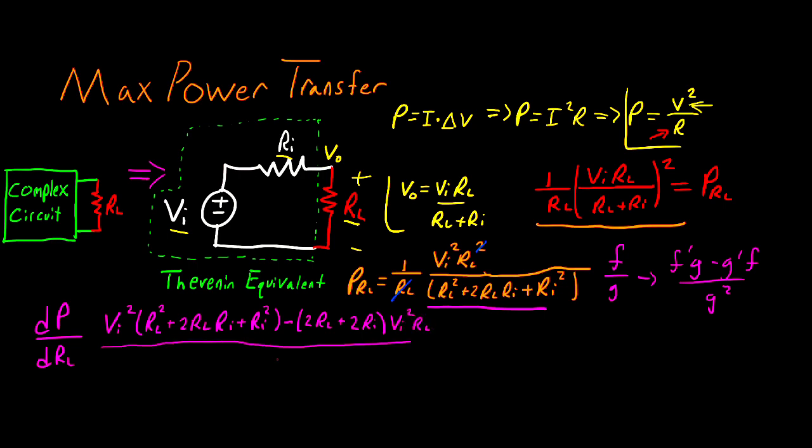And this whole thing is going to be divided by g squared. But the good news is because we're doing optimization and we want to find when this thing is equal to zero we don't really have to worry about g squared because we need to know when the numerator is equal to zero. So we're going to leave that part of the derivative out and we're just going to solve for when that numerator is equal to zero.